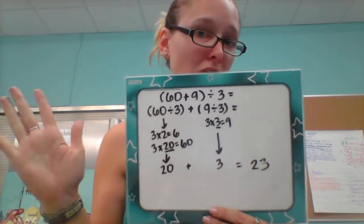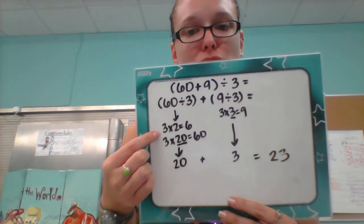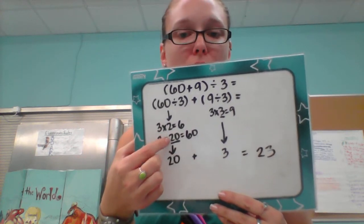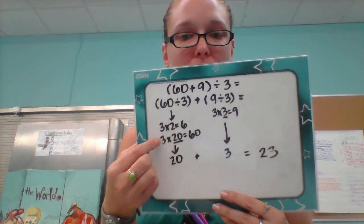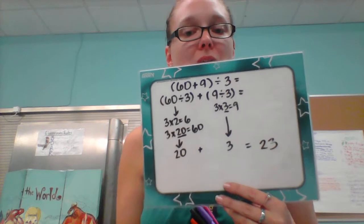Then I use this strategy in order to solve it. I use my facts, so from the fact family, 3 times 2 is 6, so 3 times 20 is 60. So I know that this one is 20 because 3 and 60 are right here. This is the next factor.